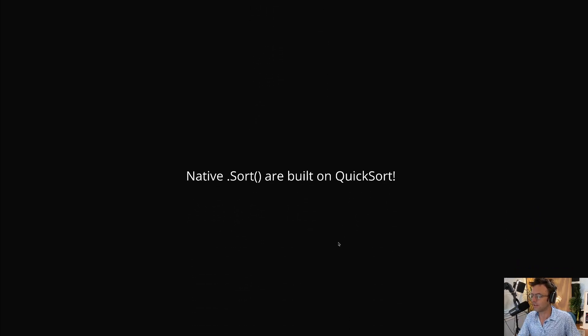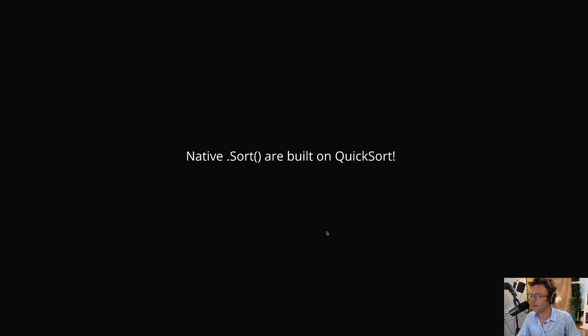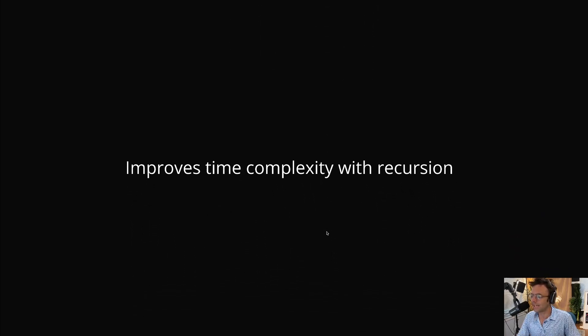Quick Select is the superior algorithm because its time complexity is linear, compared to O(n log n) for the heap. Quick Select is also very handy to know because most sort methods in C# or Java are built upon Quick Sort, and Quick Select is a derivative of Quick Sort. Also, this is one of the few cases in computer science where time complexity actually improves with recursion, which is important to learn.